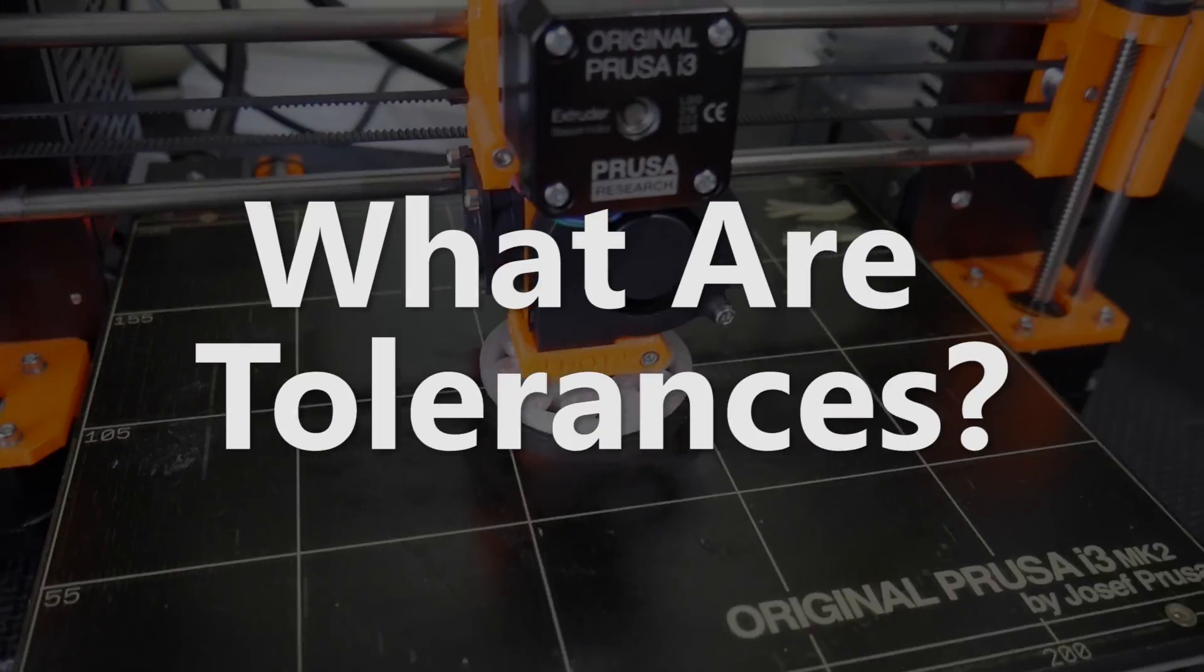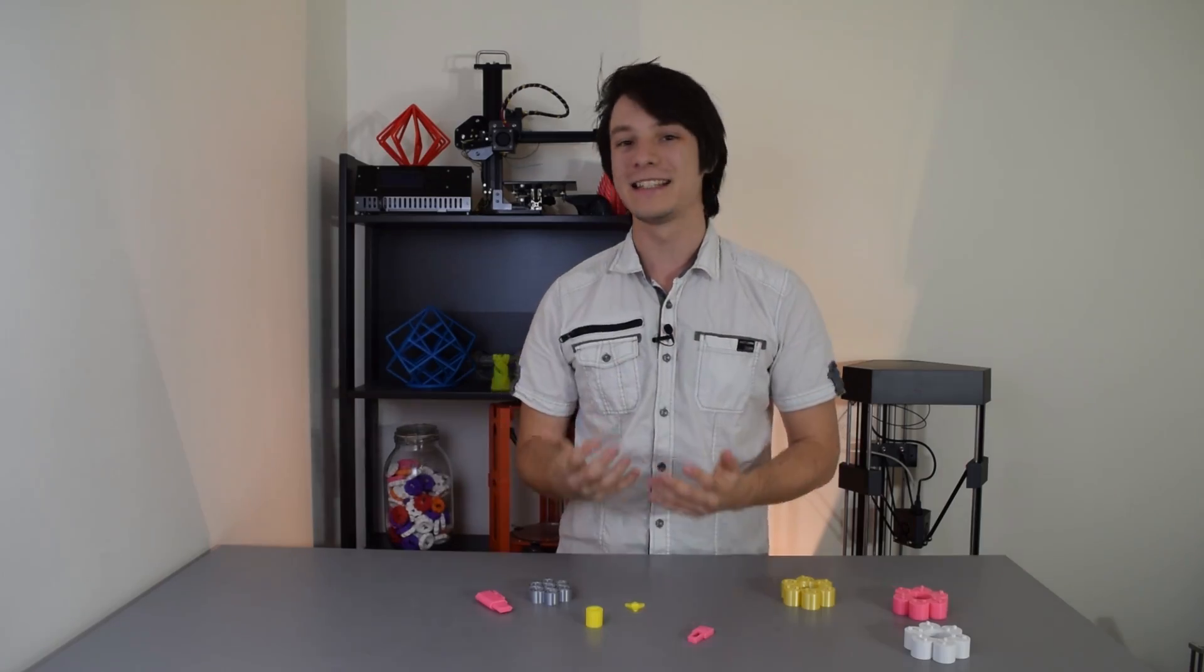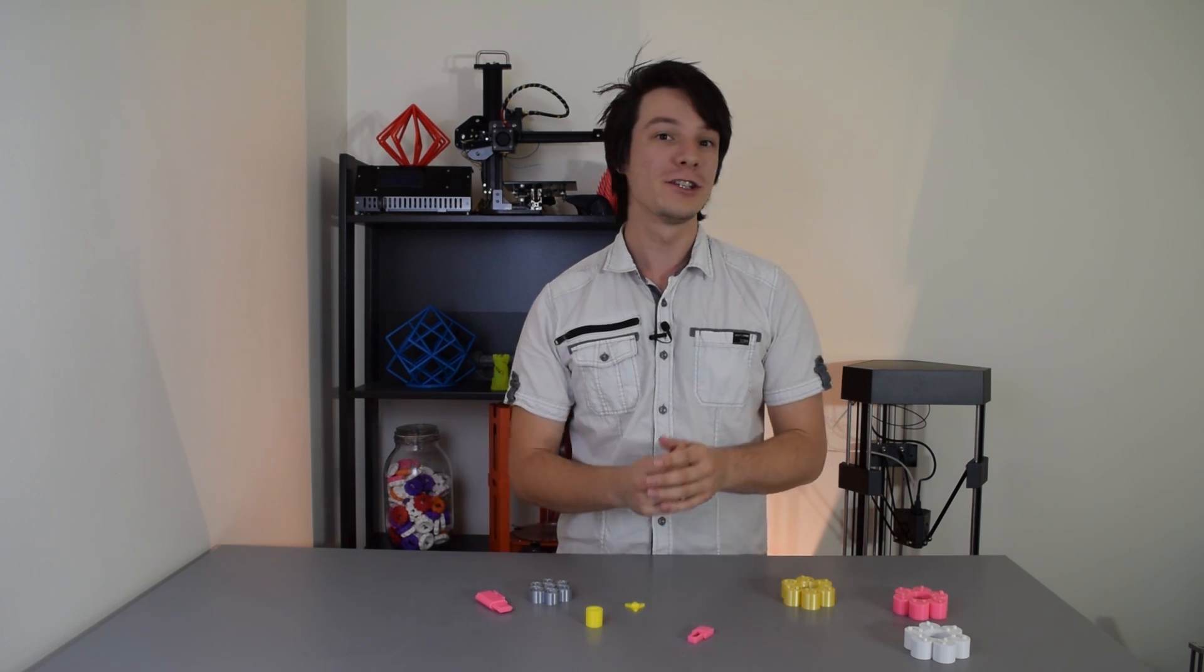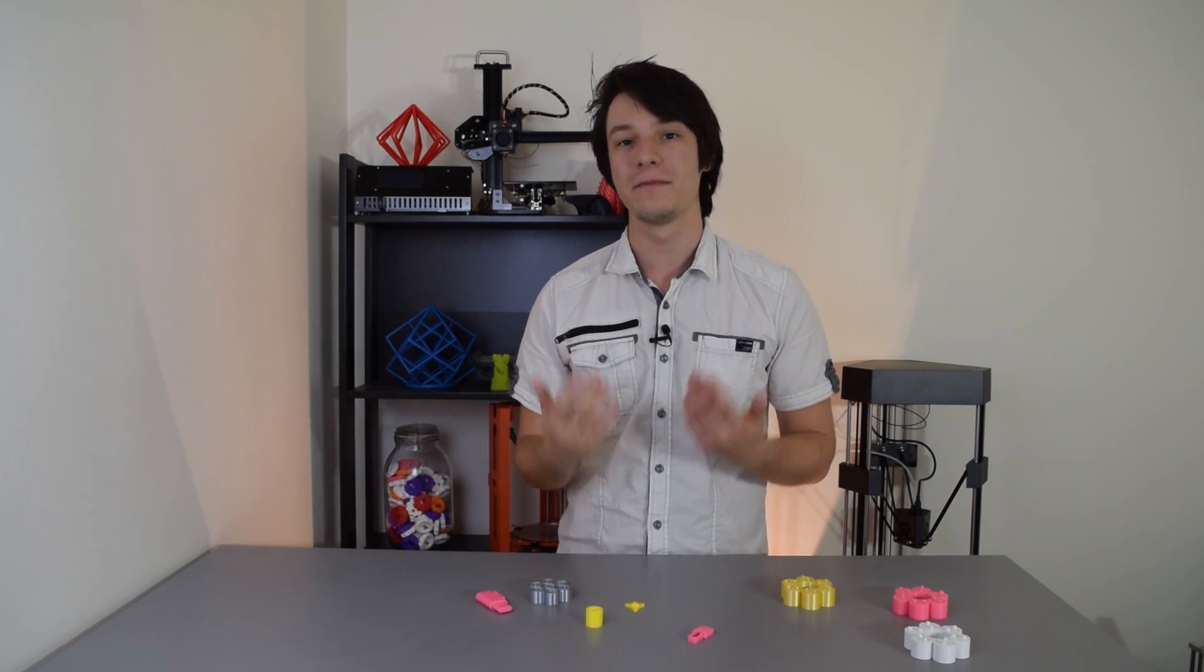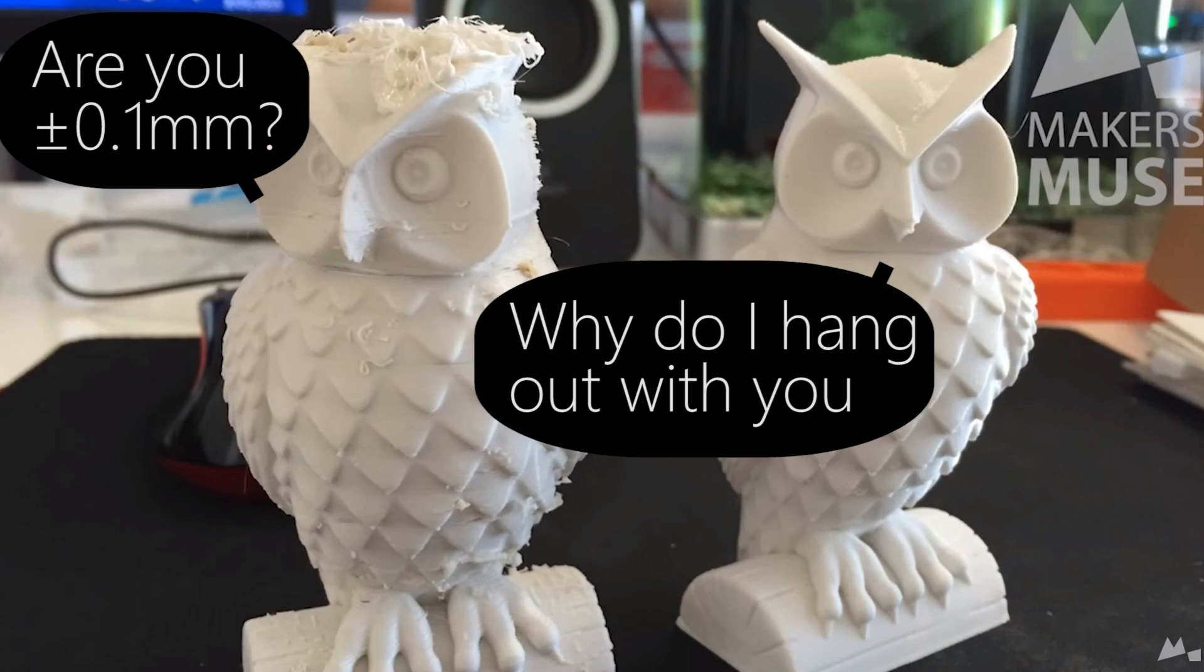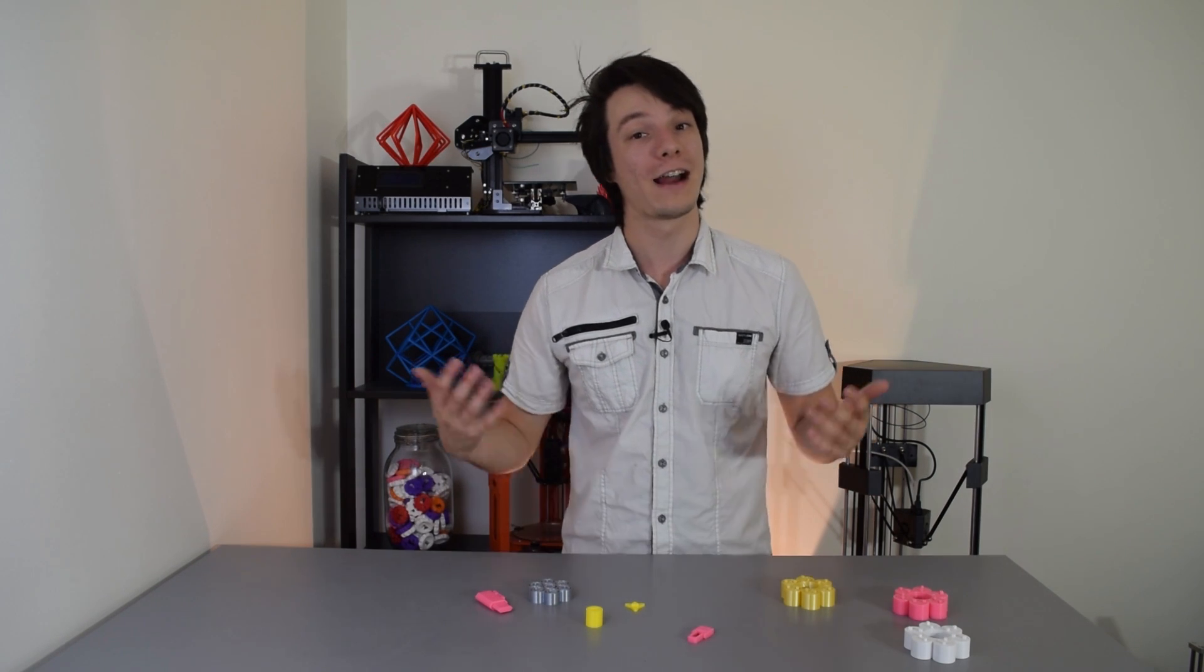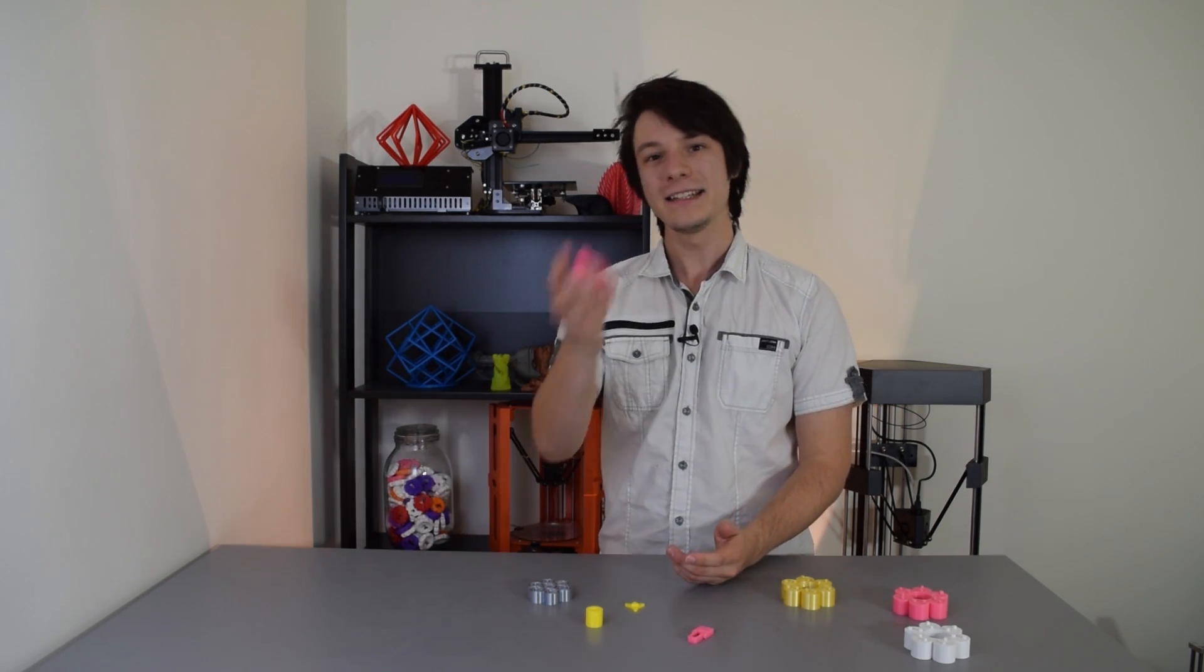Okay, but before I dive into it, what are tolerances and why should you care? Well, nothing is exact in life. You can try to design something to be exactly 10mm long, but it's never going to be perfectly 10mm. So when you're printing a single object, that's okay, no one really cares. But when objects interact with each other, that's when things get a little bit more interesting.